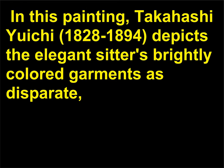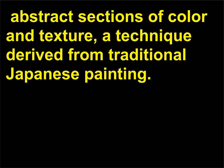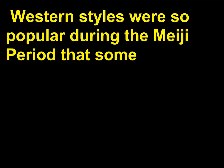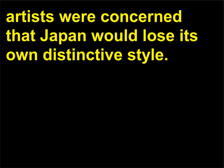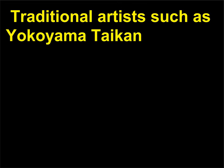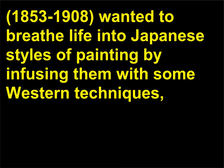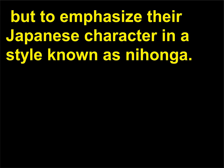In this painting, Takahashi Yuichi, 1828–1894, depicts the elegant sitter's brightly colored garments as disparate, abstract sections of color and texture, a technique derived from traditional Japanese painting. Western styles were so popular during the Meiji period that some artists were concerned that Japan would lose its own distinctive style. Traditional artists such as Yokoyama Taikan, 1853–1908, wanted to breathe life into Japanese styles of painting by infusing them with some western techniques, but to emphasize their Japanese character in a style known as Nihonga.